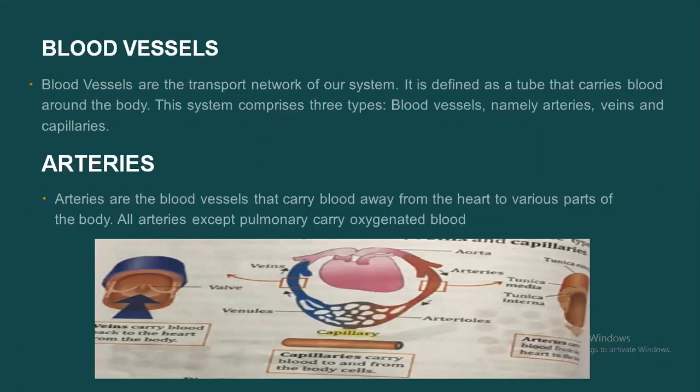First we are going to discuss about arteries. Arteries carry blood away from the heart towards any organ. All arteries except the pulmonary artery carry oxygenated blood. The pulmonary artery is the only artery which carries deoxygenated blood. Please do remember: the pulmonary artery is the only artery which carries deoxygenated blood from the heart to the lungs — this is an exception.